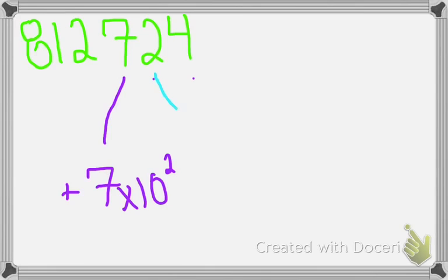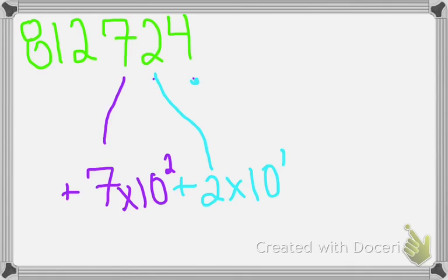So now we take our fifth number, which is 2, and multiply it by 10 to the power of 1, because now we only have 1 number left in our original number. So now we add 4, not to the power of 10, because there are no more numbers after 4.